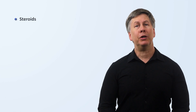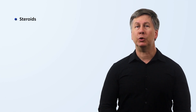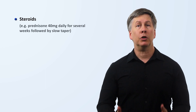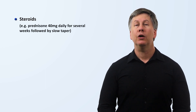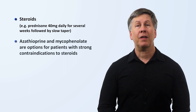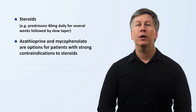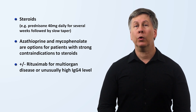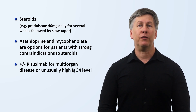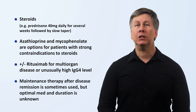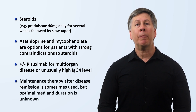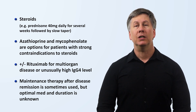When it comes to treatment, the literature is relatively sparse and preferred approaches vary between experts and across geography. As a general rule, steroids are used first for almost all symptomatic individuals. A typical regimen would be something like prednisone 40 mg daily for several weeks, followed by a slow taper. Azathioprine and mycophenolate are options for patients with strong contraindications to steroids. Rituximab is sometimes used for patients with multi-organ disease or unusually high levels of IgG4. Maintenance therapy after disease remission is sometimes used, but the optimal medication and duration is currently not known.